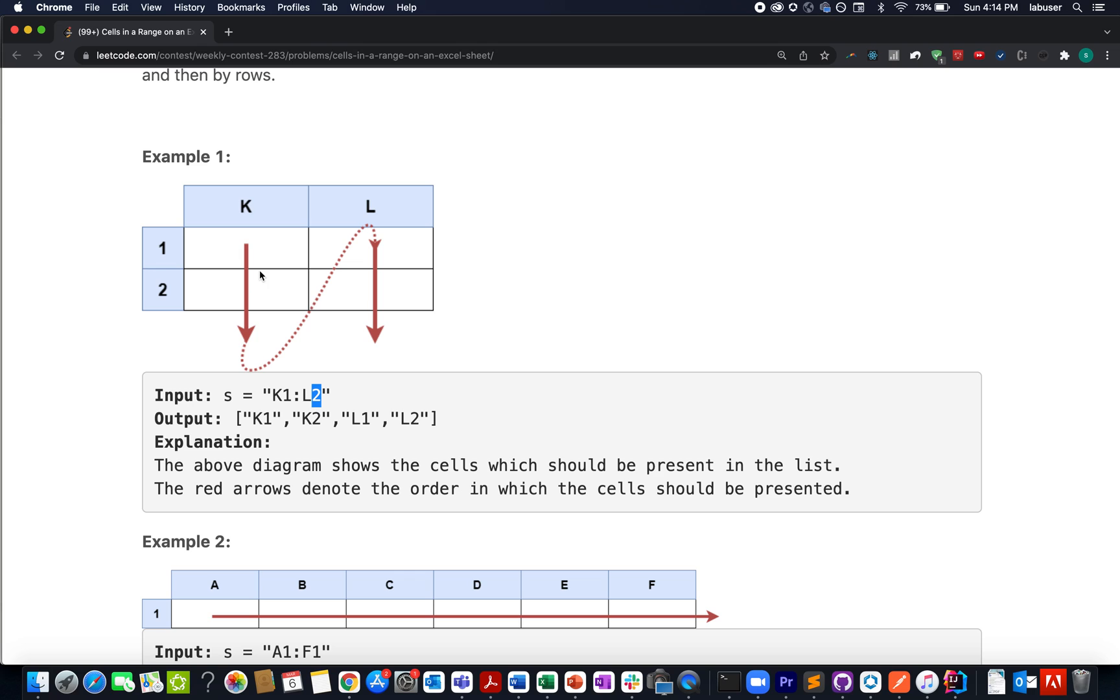What we need to do is place elements starting from the starting row starting column up till ending row ending column, and we need to return the output in the string format as highlighted here for this particular case.